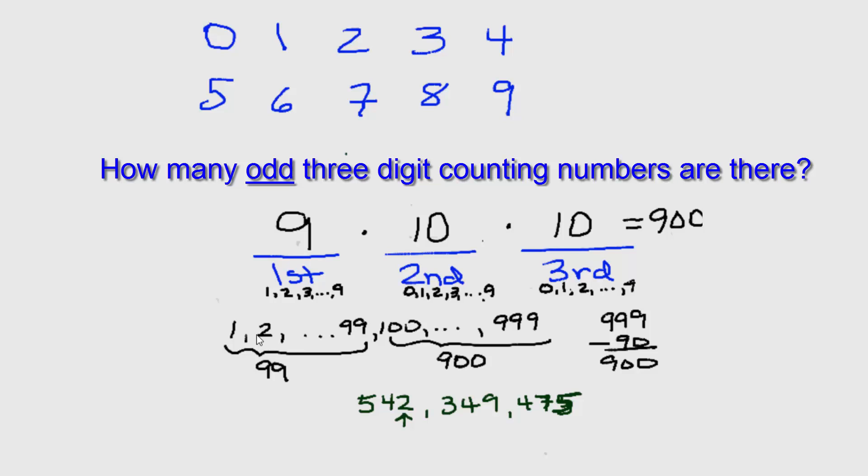On the other hand, the number 349 is odd because the 9 is odd, the third digit is odd, as well as the 5 in the 475. So when we talk about constructing an odd 3-digit number, there's going to be a restriction on that third digit.